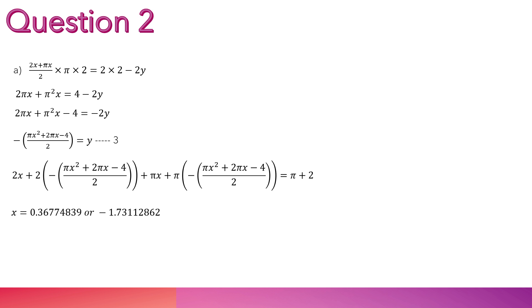Next, I multiply by 2 on both sides, getting this. Removing the half from the 2x plus pi x. And I get a 4 on the right hand side, which I will shift it to the left, and remove the negative 2 from the y, making this equation, which I call equation 3.